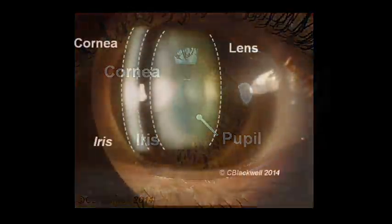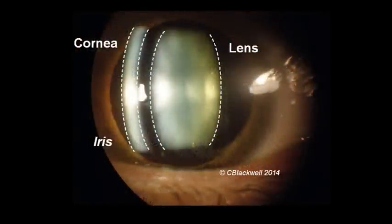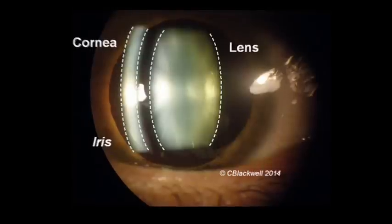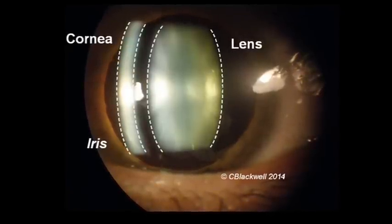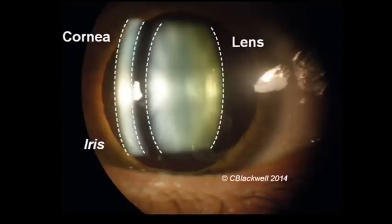This is the view we get looking through the microscope that we use to examine the eye. The pupil is widely dilated with a slit beam of light passing through the cornea and lens. Each is outlined with dashed lines to make them easier to identify.